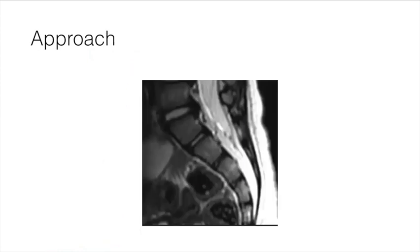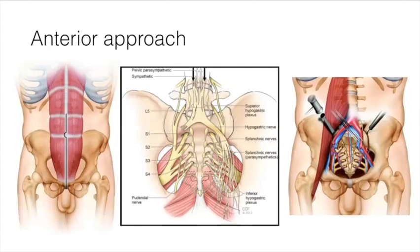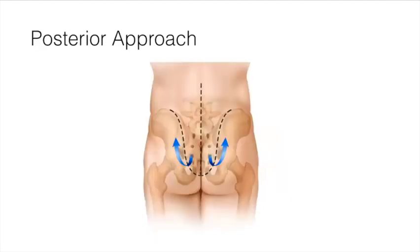For lesions at S3 or above, I perform combined anterior and posterior operations: anterior first to release soft tissues in the front and make anterior osteotomies, then posterior. For lesions below S3, a posterior-only approach is sufficient. The anterior approach can be a standard midline laparotomy (transperitoneal) or retroperitoneal. Posteriorly, a midline incision is standard, but chordomas and other tumors can compromise fascia and skin, requiring removal of quite a bit of soft tissue.